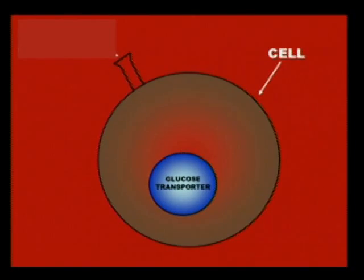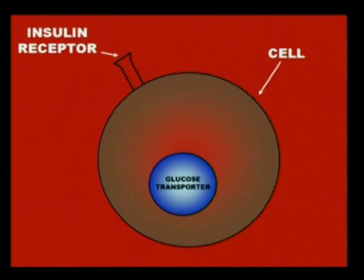Here's in a nutshell what causes diabetes. What you're looking at is a cell. This thing over here is an insulin receptor. In each cell is something called a glucose transporter module.